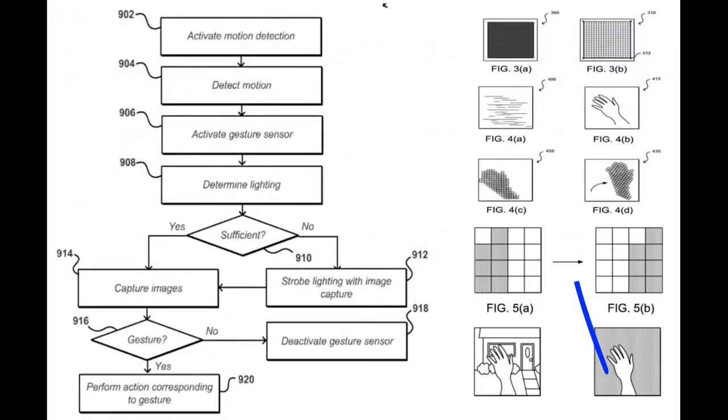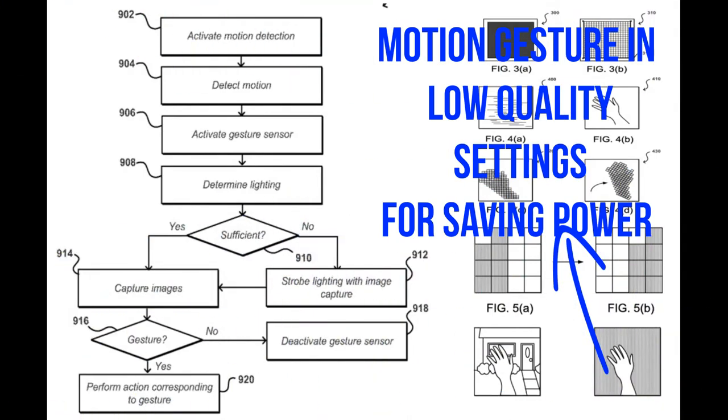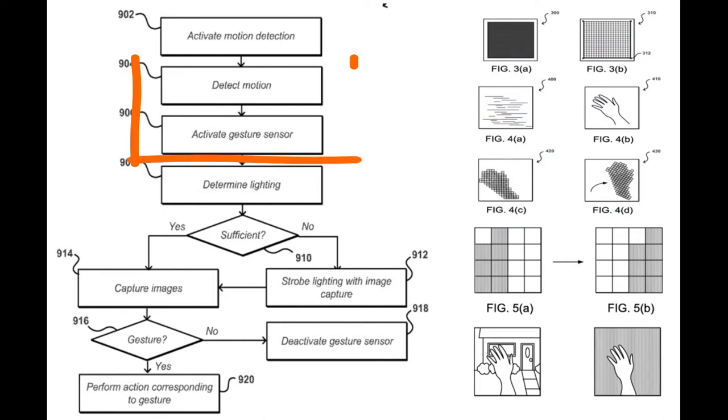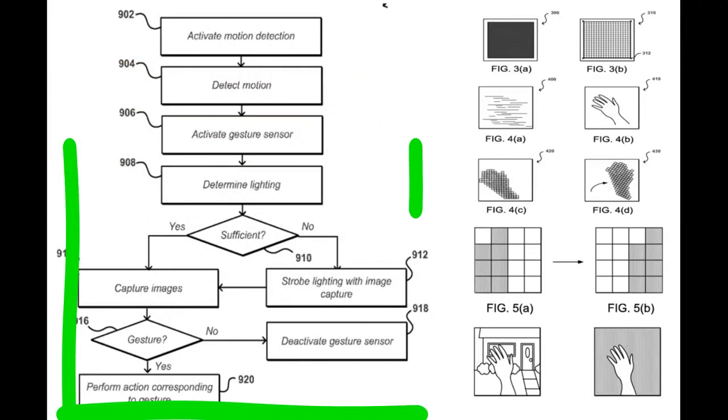Inventive steps involved with the patent are. 1. Automatic activation of motion detection. 2. Detect motion to activate gesture sensors. 3. Upon suitable lighting, response to the gesture.